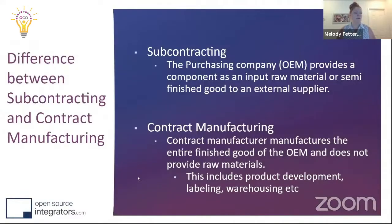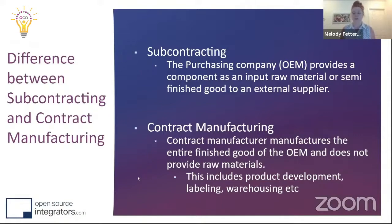The first thing I wanted to talk through is the difference between subcontracting and contract manufacturing. With subcontracting, you're sending out material to a subcontractor — they create the finished good or a subassembly and send it back to you. With contract manufacturing, the contract manufacturer manufactures the entire finished good from the OEM and sends it back. I'm not a huge proponent of contract manufacturing — it actually ends up being cheaper to just buy the finished good directly from the supplier.